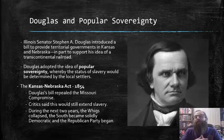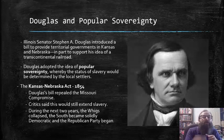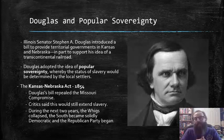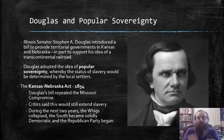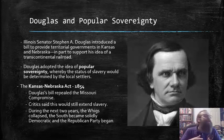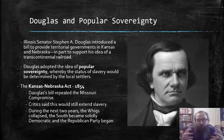The clash between pro and anti-slavery expansion forces came to a head once again with the organization of the Kansas and Nebraska territories. Illinois Senator Stephen A. Douglas introduced a bill to provide territorial governments in Kansas and Nebraska, in part to support his idea of a transcontinental railroad. Douglas adopted the idea of popular sovereignty in those territories, whereby the status of slavery would be determined by the vote of local settlers. This resulted in the Kansas-Nebraska Act of 1854, which officially repealed the old Missouri Compromise. Critics said this would still extend slavery, and during the next few years the Whig Party collapsed amid the turmoil over this issue. The South became solidly Democratic, and the Republican Party arose out of the fall of that old Whig Party.